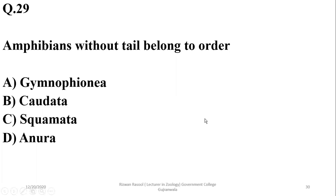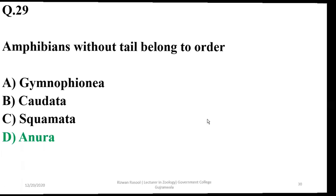Question 29: Amphibians without a tail belong to the order Anura. As you know, we have Cecilians and Caudates — though those are considered within the amphibian classes.